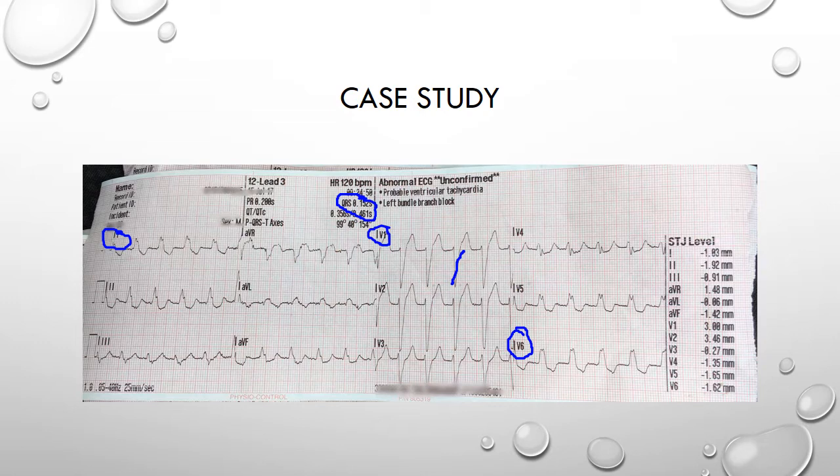There are also widespread discordant secondary STT wave changes throughout the ECG. Now, as already mentioned, this patient was known to have left bundle branch block as his baseline, so where the crew work in London this currently falls outside of local guidelines for cath lab activation. This did not stop them from trying, but unfortunately they were unsuccessful in getting the patient accepted for PCI and had to convey to the local ED instead.